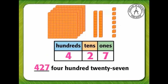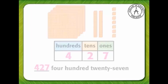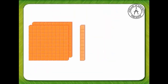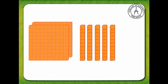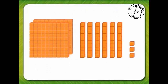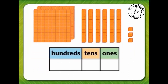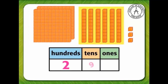Now let's show another number. There are two hundreds, six tens, and three ones. Let's write the number on the place value chart. Write a two in the hundreds place and a six in the tens place.